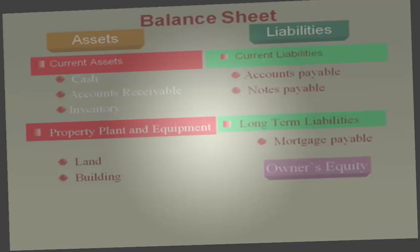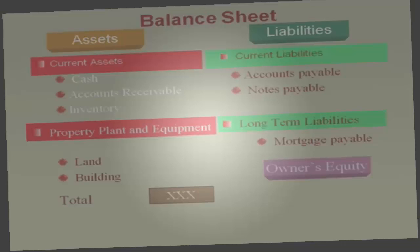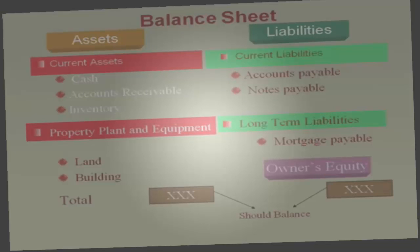On the balance sheet, you total the assets column, then total the liabilities — current and long-term — plus owner's equity on the right. If a balance sheet doesn't balance, you've got problems. A balance sheet should always balance.